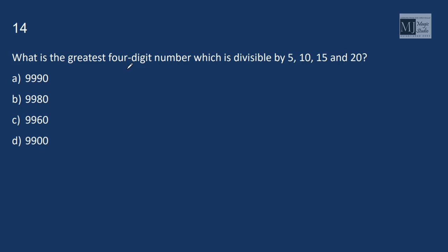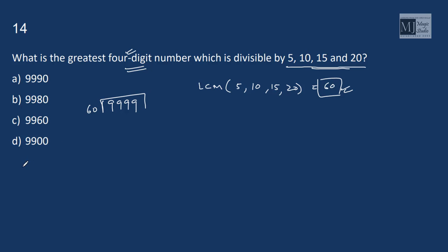What is the greatest 4 digit number, which is divisible by 5, 10, 15 and 20? LCM of 5, 10, 15 and 20 is 60. That means we are looking out for multiple of 60 and which is the greatest 4 digit number. The greatest 4 digit number is 9999. Let's divide quickly this by 60.